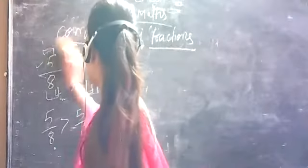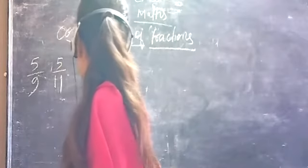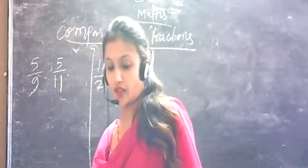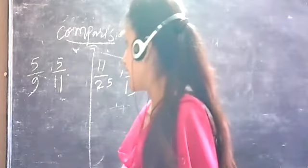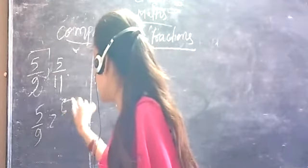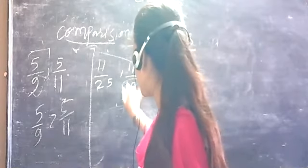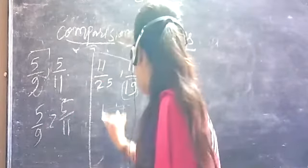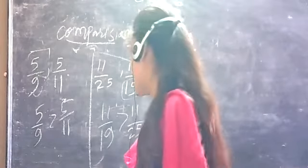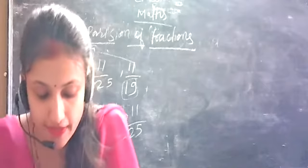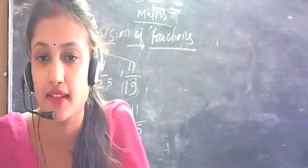Let's see an example here. The same numerator means the smaller denominator will give the greater fraction. The denominator being smaller makes the fraction larger. The numerator is the same; the smaller denominator gives a greater fraction. We will do the comparison of two unlike fractions, and we will continue in the next class.